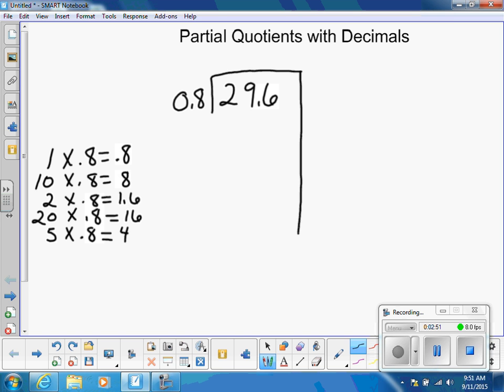Let's look at our list. We see that 20 groups of 8 tenths is equal to 16. I like that it's pretty close. So let's go ahead and put this out here. 20 groups of 8 tenths, and we knew that was 16. So we're using 16 out of our 29 and 6 tenths. And we have leftover 13 and 6 tenths.